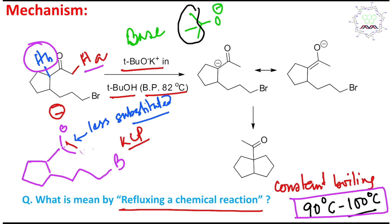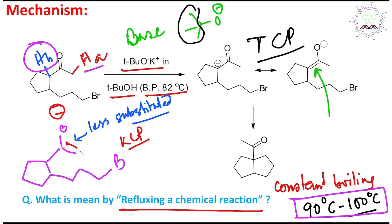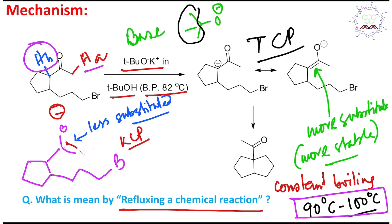There is another option: HB abstraction. This is relevant because the reaction temperature is 90 to 100°C — a pretty high temperature. Abstracting HB produces a carbanion that is also resonance-stabilized, giving an enolate called the TCP — thermodynamically controlled product. In this case, the double bond is more substituted, and more substituted double bonds are more stable, so this enolate is selectively produced under these reaction conditions.